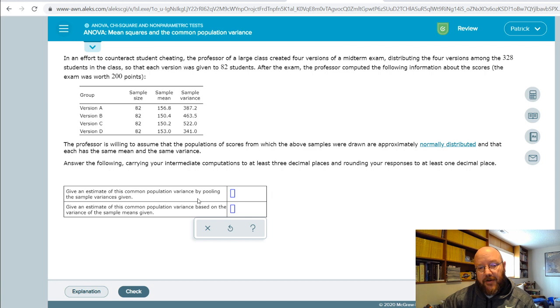Our first question is: give an estimate of this common population variance by pooling the sample variances given. When you pool the sample variances like this, in order to get an estimate of common population variance, what you're actually calculating here is something we call mean square error or MSE.